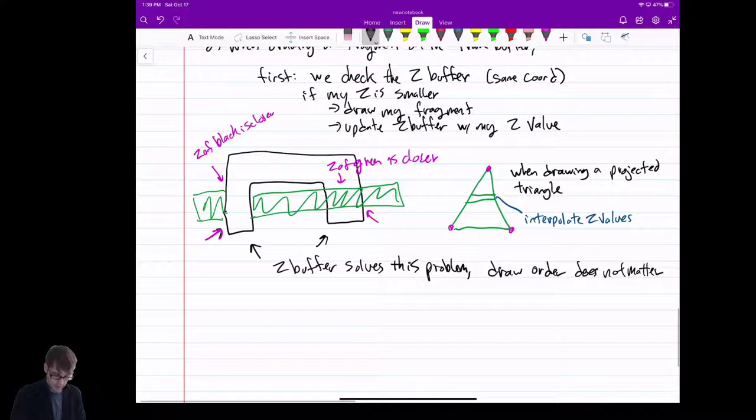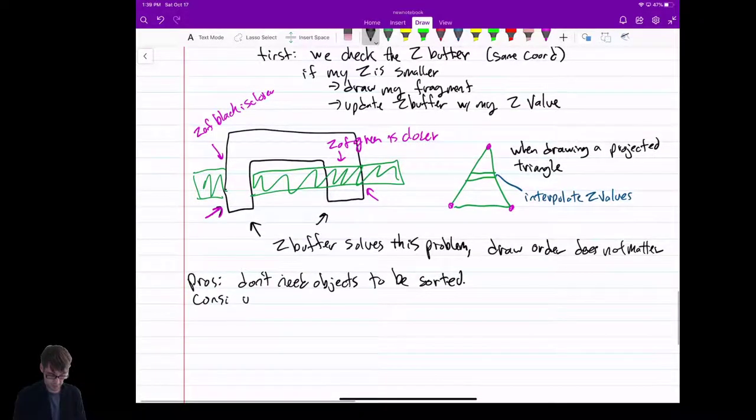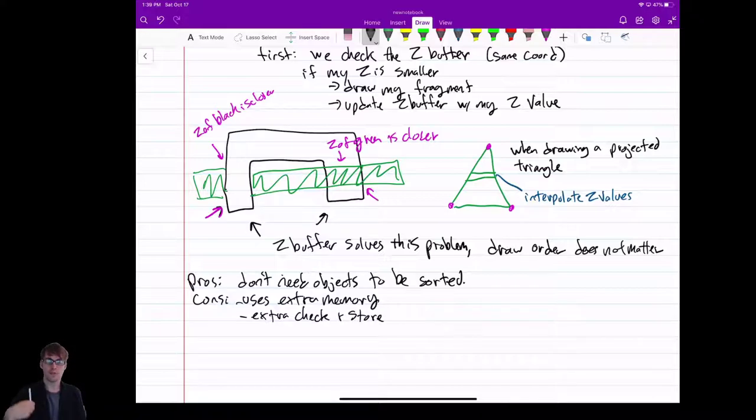So the pros here, that you don't need the objects to be sorted. Of course there are cons. And the cons are, well, we need extra memory. And there's also an extra check in store every pixel. You check your Z against what's there, and you replace it, you update it if it needs to be for each fragment.